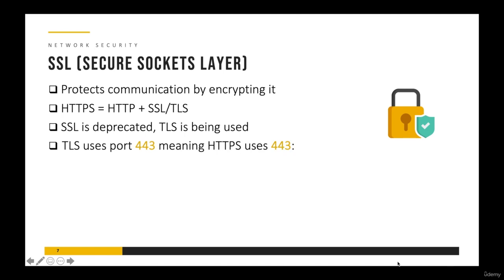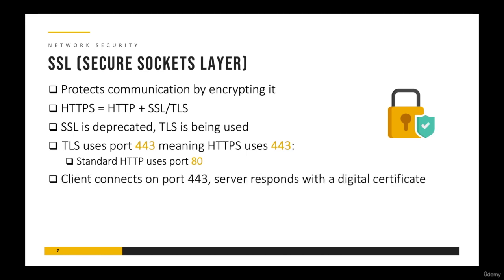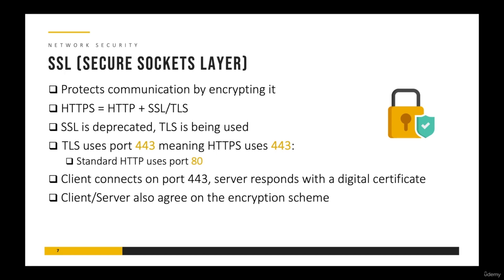TLS always uses port 443, meaning a client connects to the server on port 443. This means HTTPS uses port 443 because HTTPS uses TLS, in contrast to HTTP which used port 80. When a client wants to communicate with a server using HTTPS, it connects on port 443 and the server responds with its digital certificate. The digital certificate contains the public key of the server so that the client and server can both encrypt and decrypt. The client and server also need to agree on the encryption scheme, negotiating a mutually agreeable scheme from their supported options.